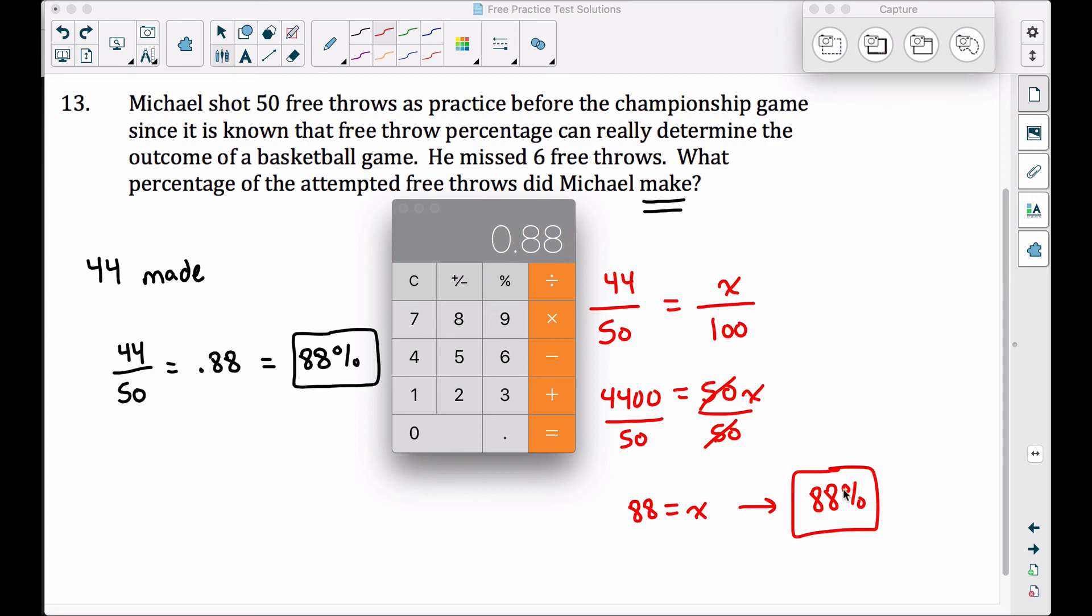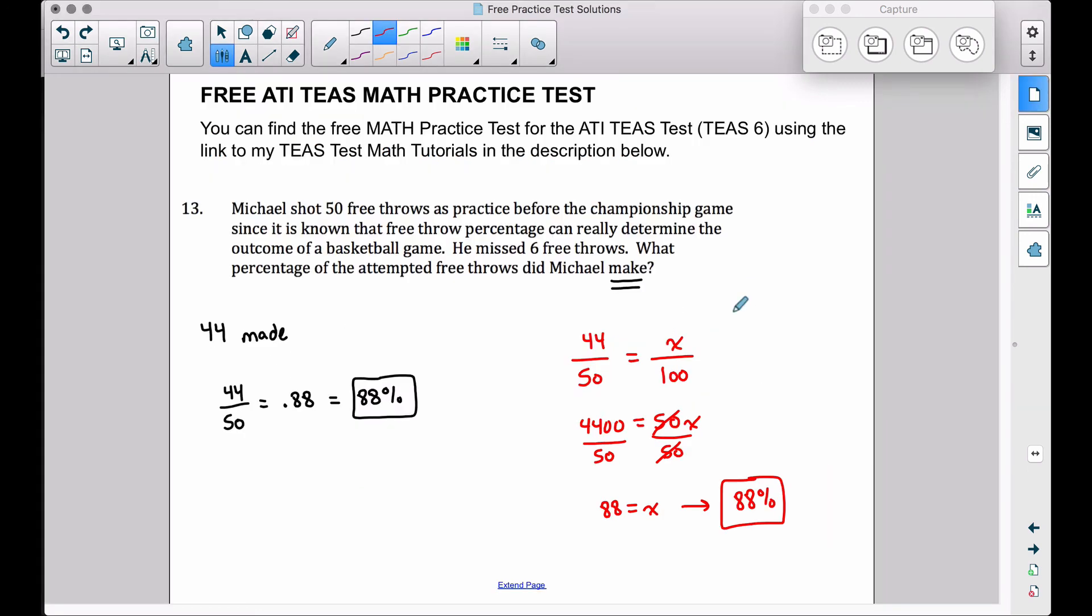88% - Michael made 88% of his free throws. And there you have it, problem number 13 on the free ATI TEAS math practice test. And again, you can find this over at www.bcraftmath.com. And that's it for this video. I hope it helped.